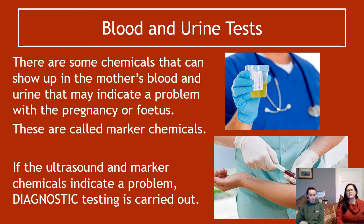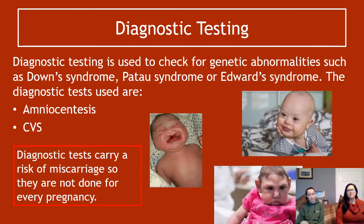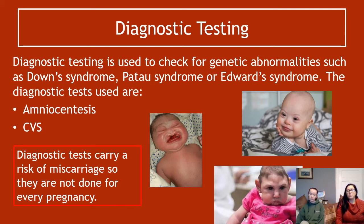It's important to stress that diagnostic testing is not for everyone — only if blood, urine, and ultrasound are showing an issue. Diagnostic testing is used to check for genetic abnormalities such as Down syndrome, Patau syndrome, or Edwards syndrome — big chromosomal abnormalities. The two diagnostic tests you need to know are amniocentesis and CVS.